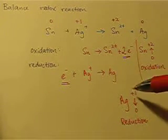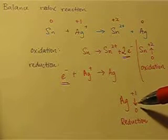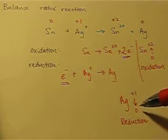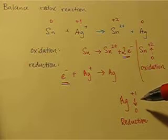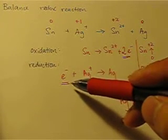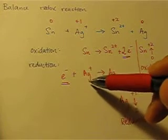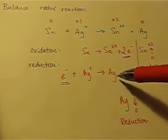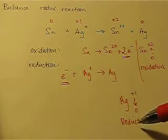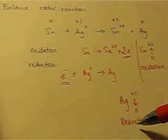For reduction, the oxidation number is getting more negative. And the reason why it is becoming more negative is because we are adding electrons to the element to become more negative.